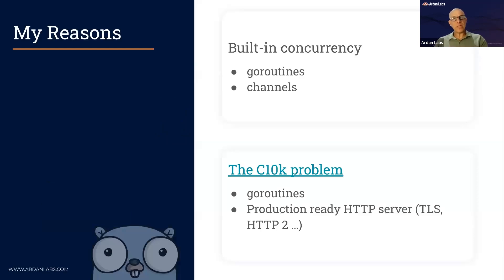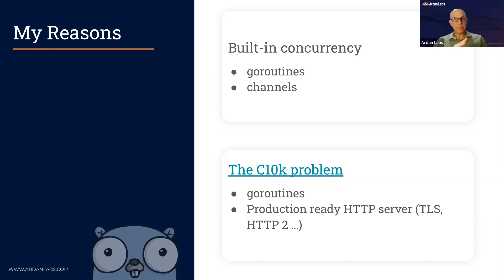When I came to Go about 13 years ago, at the very beginning of Go, I was looking for two things. One is built-in concurrency. In the old days we had what is called the free lunch — every time Intel came out with a new CPU, the code went faster. About 15 years ago this stopped; CPU frequency plateaued at around 3-something gigahertz.